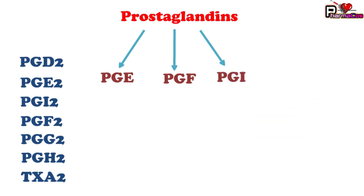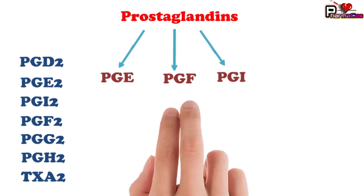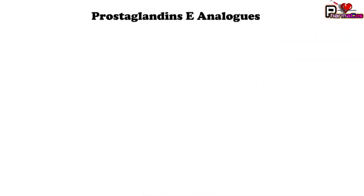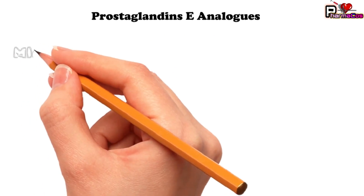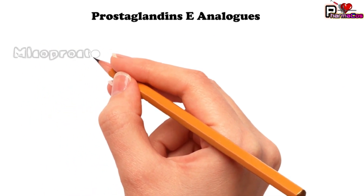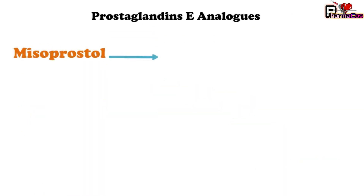Today let us discuss different types of prostaglandin analogs, how they act, and what their clinical uses are. Let us start with prostaglandin E analogs. The first drug in this category is misoprostol, which is a prostaglandin E1 analog.